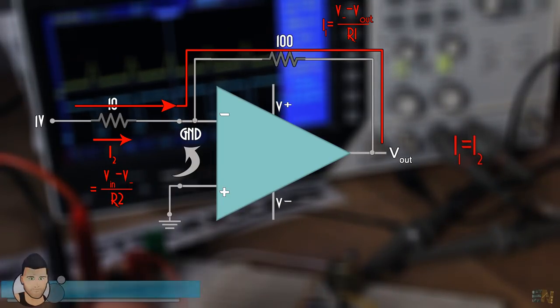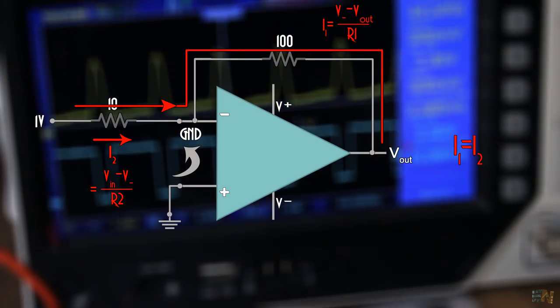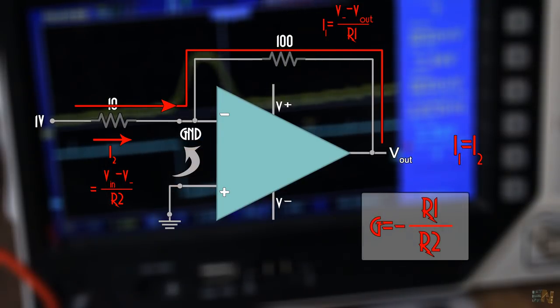But this is the same value as current 1. From these two equations, we get that the gain which is the output divided by the input is negative R1 divided by R2. And there is our amplification.